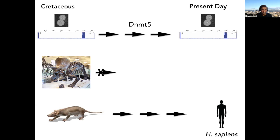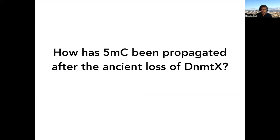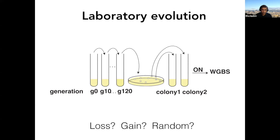How has this lineage maintained 5-methyl-C after the ancient loss of DNMTX? We did two classes of experiments. First, laboratory evolution experiments: we took wild-type Cryptococcus cultures, carefully measured methylation by bisulfite sequencing, propagated without bottlenecking for 120 generations, then plated for single colonies, grew them up, and did whole-genome bisulfite sequencing.